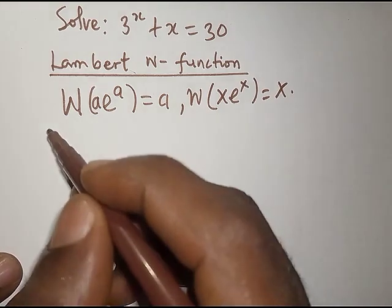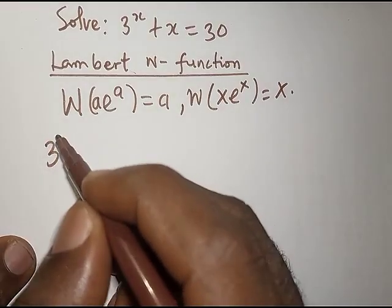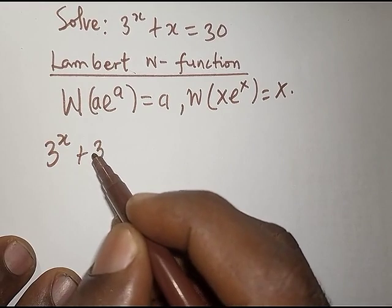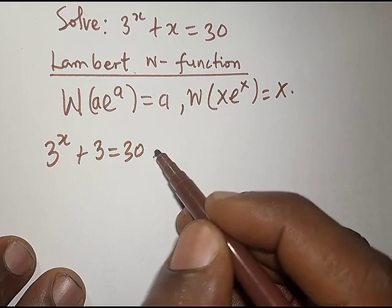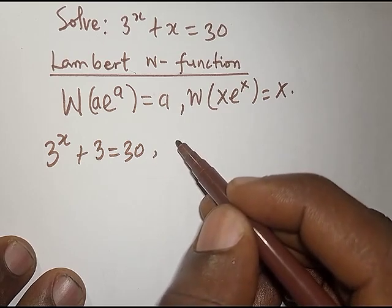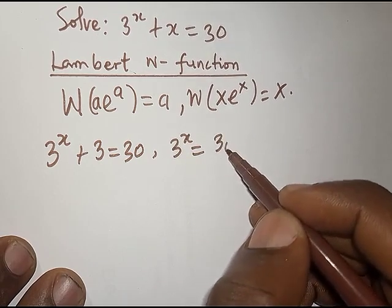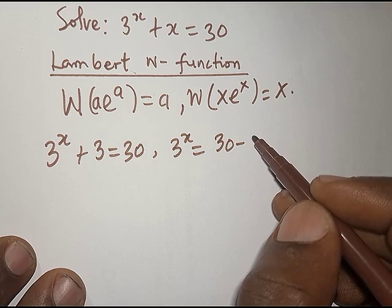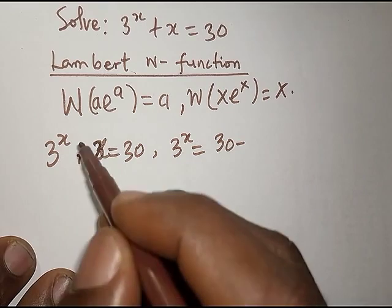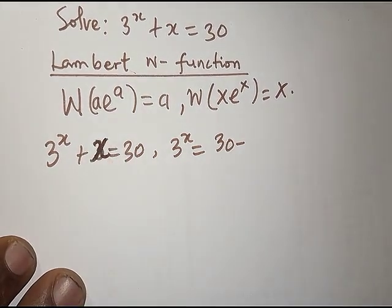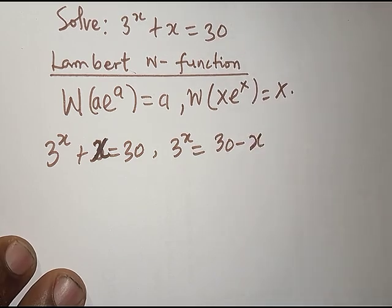Now we start solving the given equation: 3^x + 3 = 30. I'm going to rewrite this as 3^x = 30 − x. So we have 3^x equals 30 minus x.